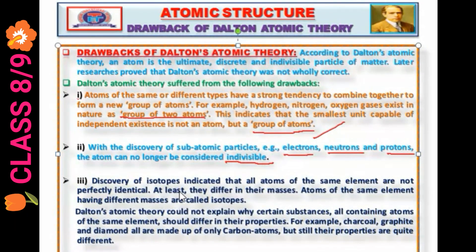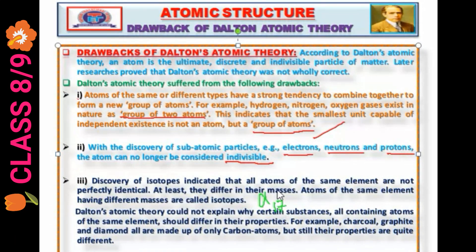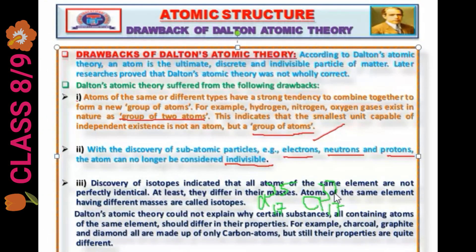Number three: the discovery of isotopes and isobars indicates that all atoms of the same element are not perfectly identical; at least they differ in their masses. Atoms of the same element having different masses are called isotopes. For example, chlorine has atomic number 17, with atomic masses 35 and 37. So atomic masses are different but atomic numbers are the same.